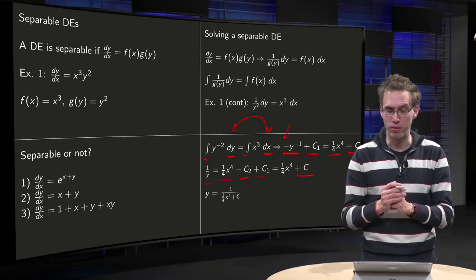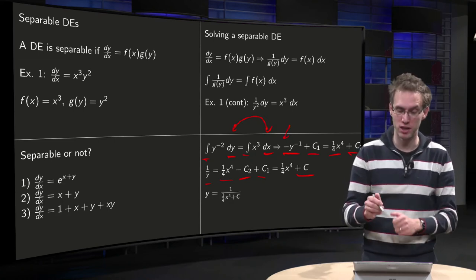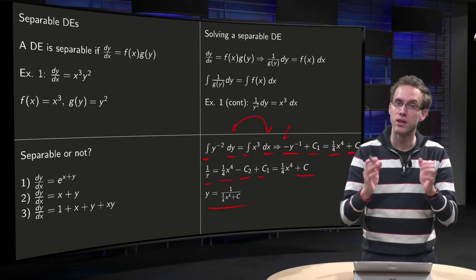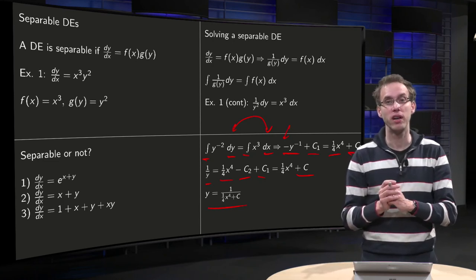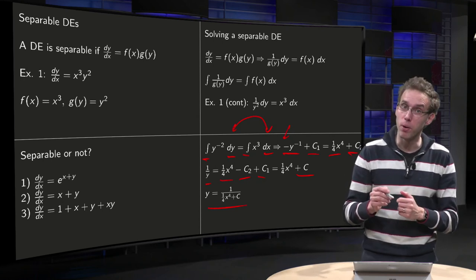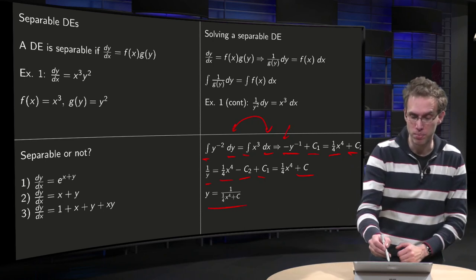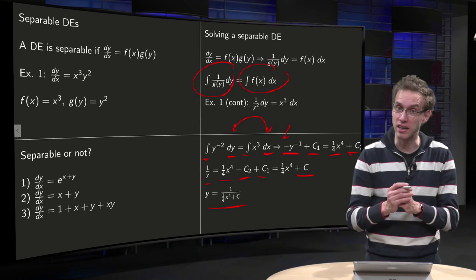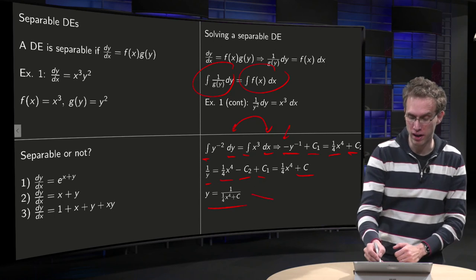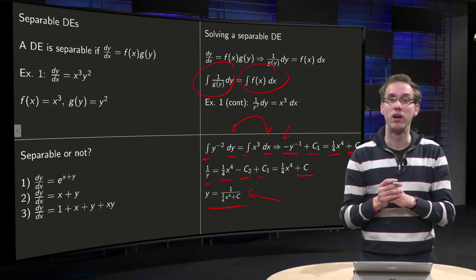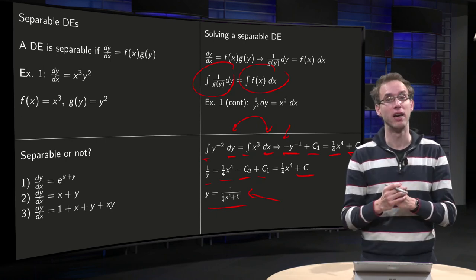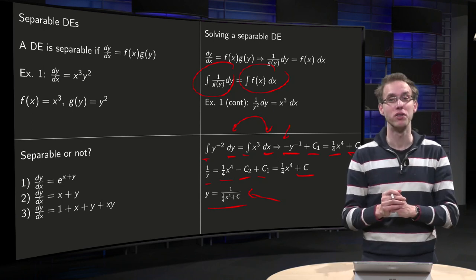We want to solve for y. We have 1/y = (1/4)x⁴ + c, so y = 1/((1/4)x⁴ + c). Now you know what separable differential equations are and how to solve them. The practical challenges are: first, it may be difficult to find the antiderivatives, and second, it can be difficult to solve for y — to write y explicitly in terms of x. But if you can overcome those technical difficulties, then you can solve several differential equations this way.